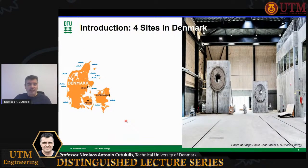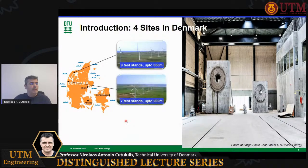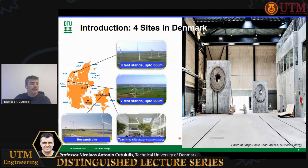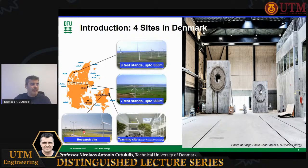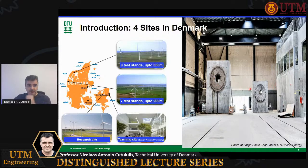In Denmark, we have three main sites where we operate. We have two large test sites for wind turbines on the west coast of Denmark, very close to offshore, where some of the largest wind turbine prototypes today are being erected and tested. We have the main campus of the Danish Technical University, very close to Copenhagen, where all our teaching is done. And then we have the research site where I'm sitting right now, where most of the people are doing research. We have a lot of research facilities, including a large-scale test lab where wind turbine blades up to 40 or 45 meters in length can be tested for structural properties.